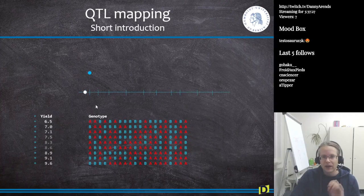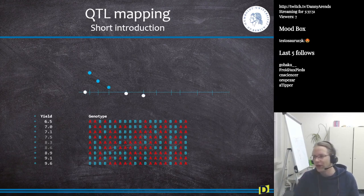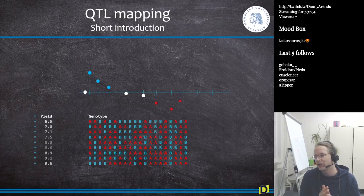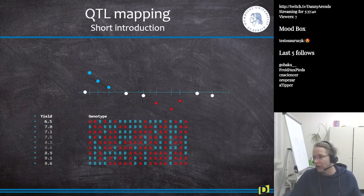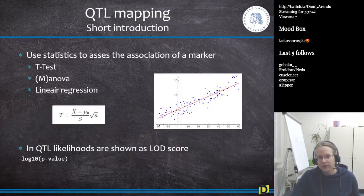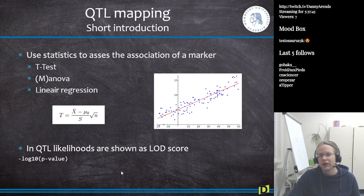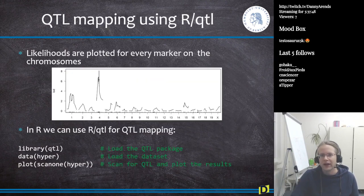So here we go one by one through the markers. At each marker we just say, is the A group bigger or smaller than the B group? That's kind of what QTL mapping is. We do statistics to associate the marker and we show it as a LOD score. We already talked about that.